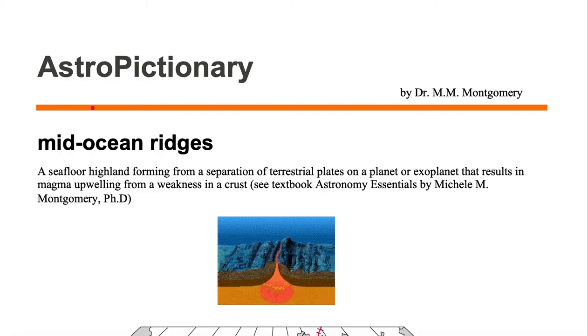Mid-ocean ridges are a seafloor highland forming from a separation of terrestrial plates on a planet or exoplanet that results in magma upwelling from a weakness in a crust.